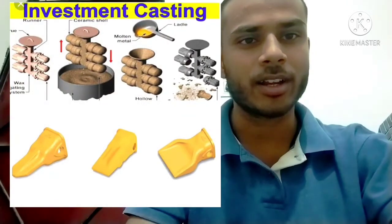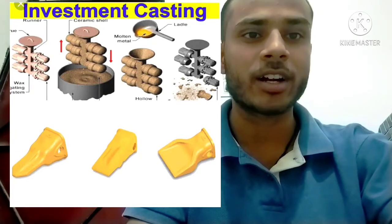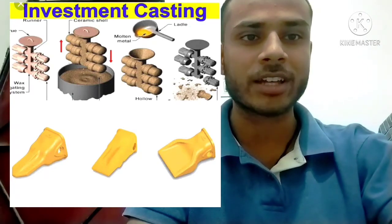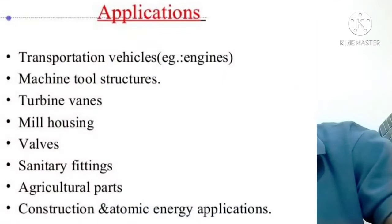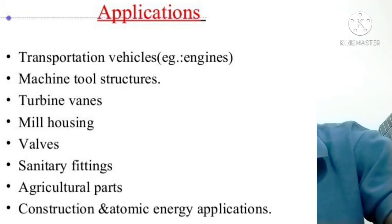Our third topic is investment casting. It comes in the category of non-metallic molds. It is also known as lost wax casting because we use wax in this casting process. This process is called investment casting because we use ceramic, which is very costly. This process allows us to create high precision, complex objects and intricate shapes — like jewelry, turbine blades, turbine engines, milling machine tools and cutters, valves, and burner nozzles.